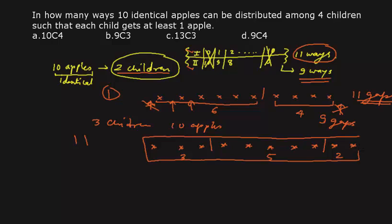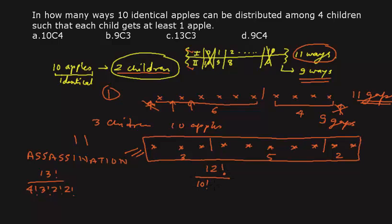This is analogous to arranging all the letters of a word like 'assassination,' where we compute 13! divided by 4! (for the S's), 3! (for the A's), 2! (for the I's), and 2! (for another repeated letter). Making the same correlation here: we have 10 identical apples and 2 identical sticks, for 12 total objects. The number of arrangements is 12! divided by 10! (for the identical apples) and 2! (for the identical sticks), which equals 12 × 11 / 2 = 66.